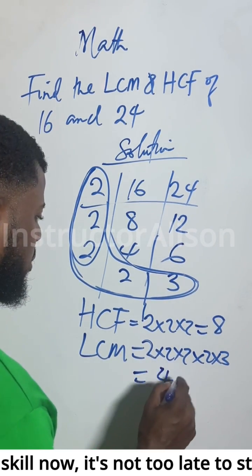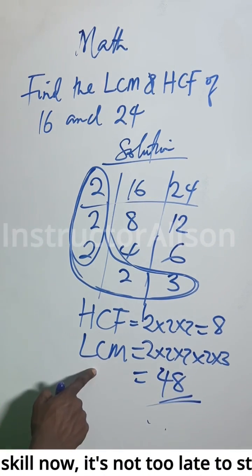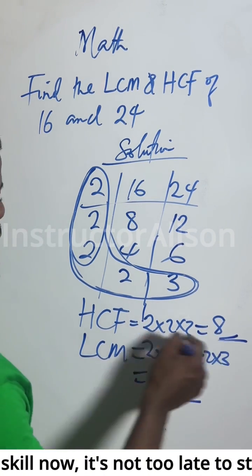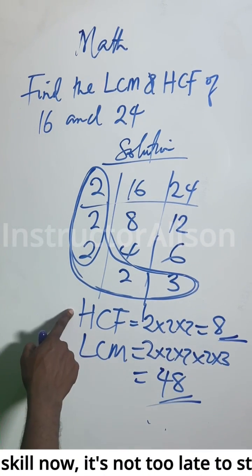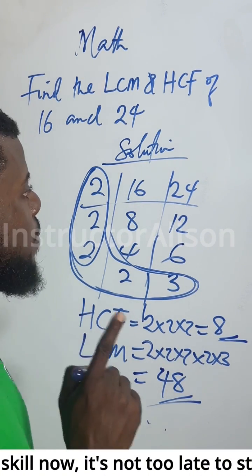Multiplying through: two by three is six, by two is twelve, by two is twenty-four, by two is forty-eight. So 48 is the result for the LCM.